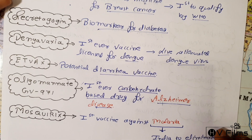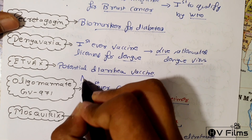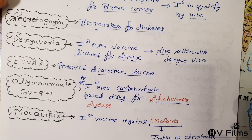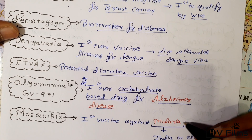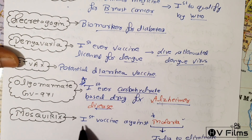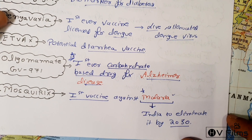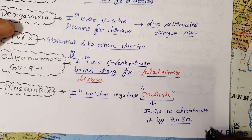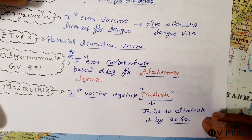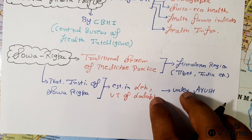Oligomannate GV-971 is the first ever carbohydrate-based drug to treat Alzheimer's disease — this is an important fact to remember. Mosquirix is the first vaccine against malaria, and India has a target to eliminate malaria by 2030.